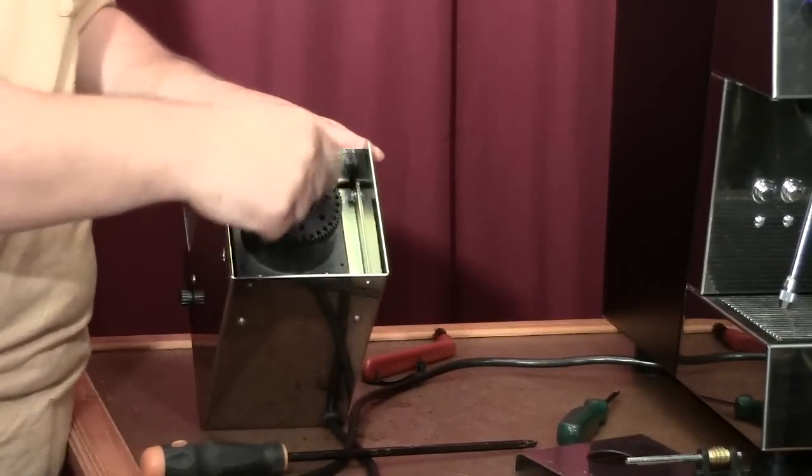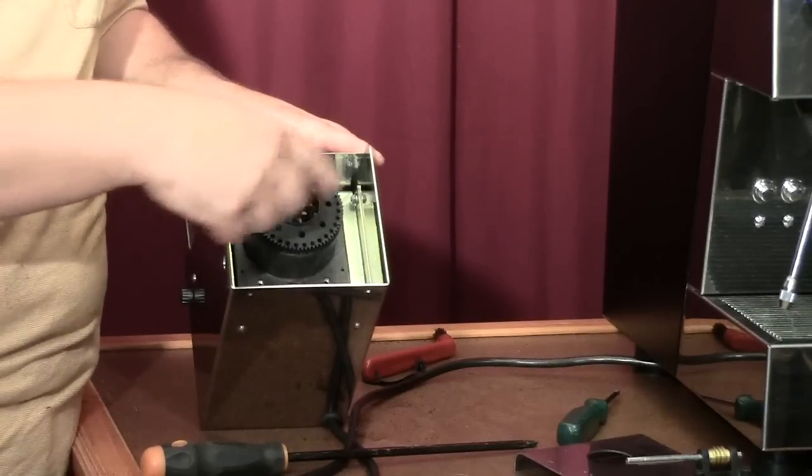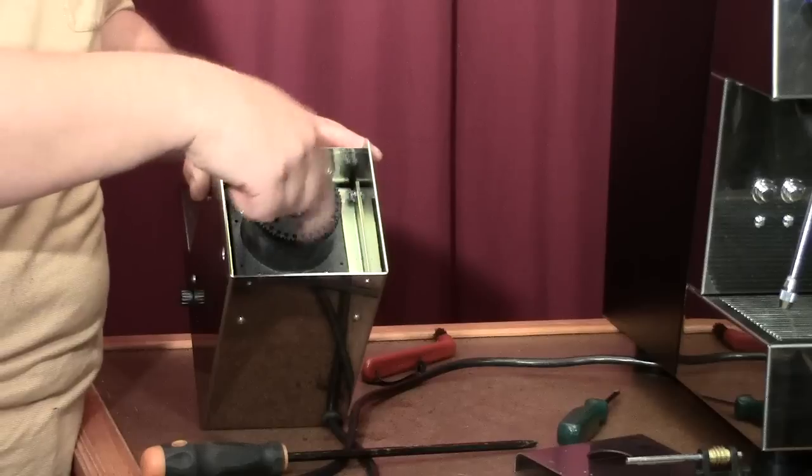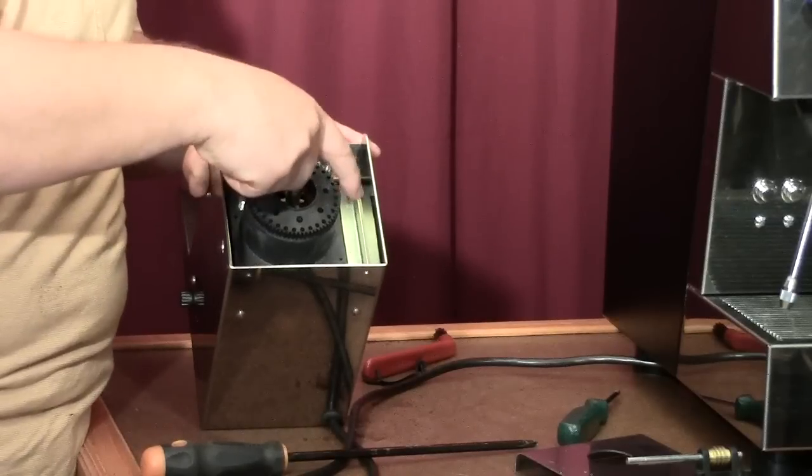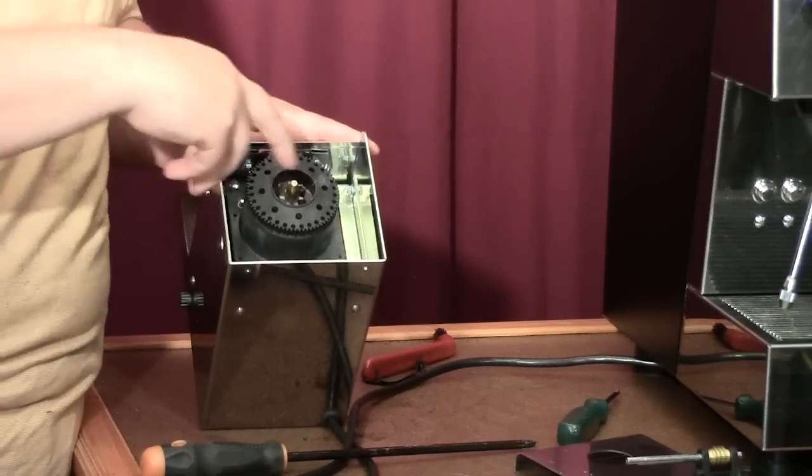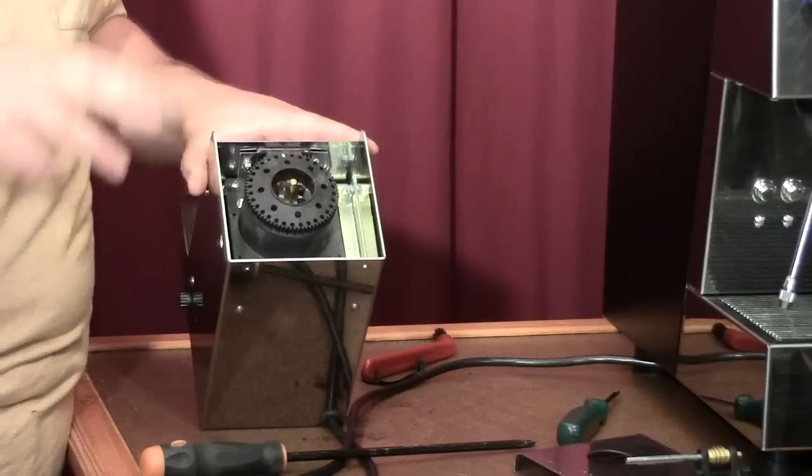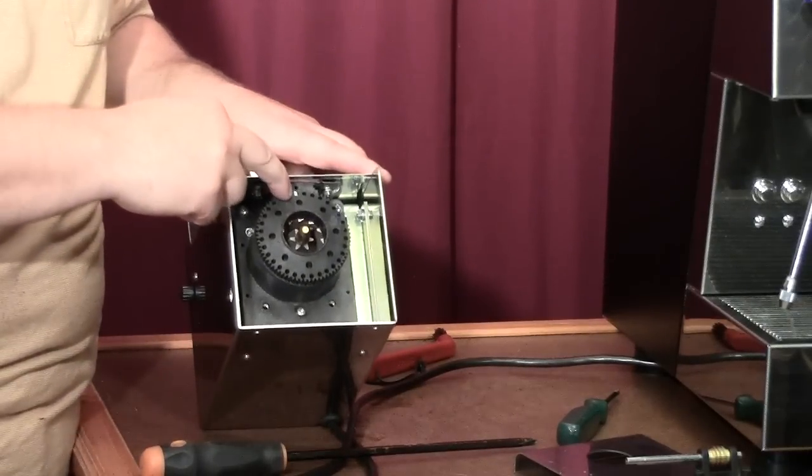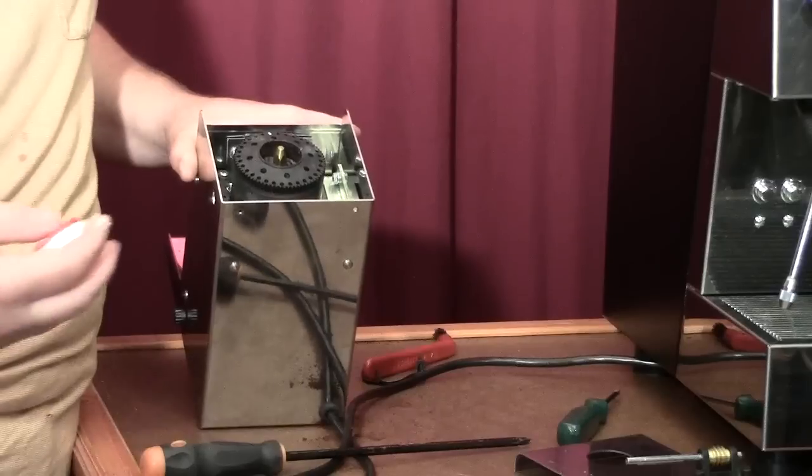Now this thing is like a screw top - it's the top burr and it moves out counterclockwise and in clockwise. It makes the coffee finer when it's really tight.